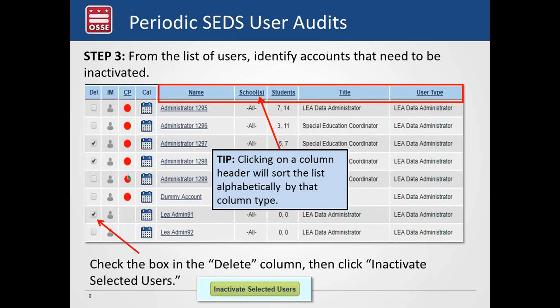The screen will show a long list of names. As the LEA Special Ed POC, you should have the delete column on the far left. By checking those boxes, you can select user accounts to inactivate — it doesn't delete their account, just inactivates it so they cannot access sensitive student files. You can sort this list by name, title, user type, or school campus by clicking on the column headers. This makes it efficient to inactivate several accounts at once.